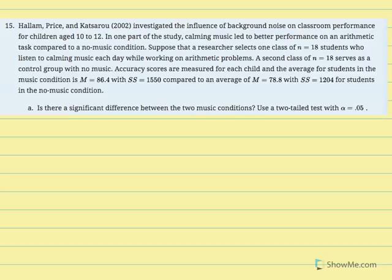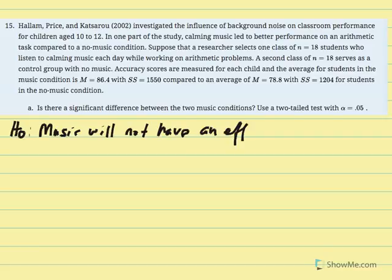Is there a significant difference between the two music conditions? Use a two-tailed test with alpha equal to 0.05. I'm going to model this one from beginning to end, starting with the research and null hypotheses.